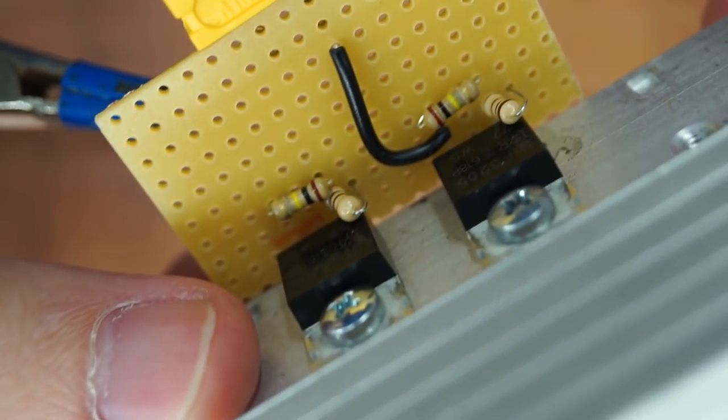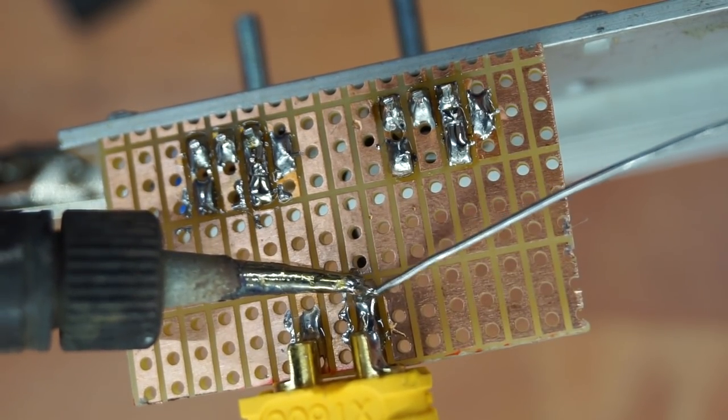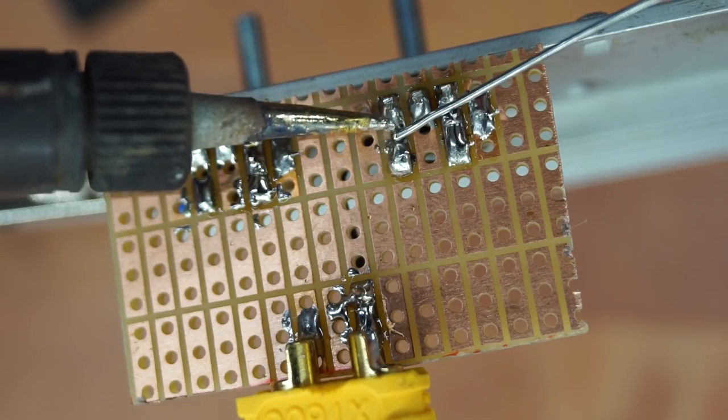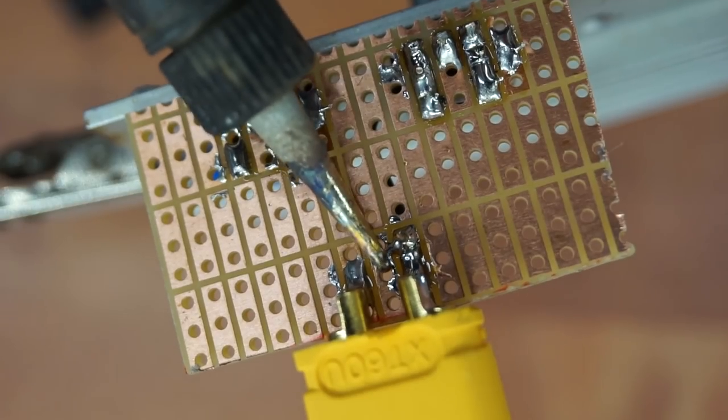Next, I grounded the source with 22 gauge solid-core wire. This is in my opinion the bottleneck in the design, so I will have to put at least one more pair to handle the current.